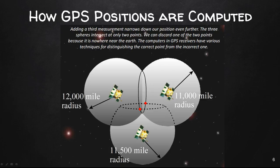Adding a third measurement narrows down our position even further. The three spheres intersect at only two points, and we can discard one of the two points because it's nowhere near the earth. One point is going to be on the earth, one is not. The computers in the GPS receiver have various techniques for distinguishing the correct point from the incorrect point.